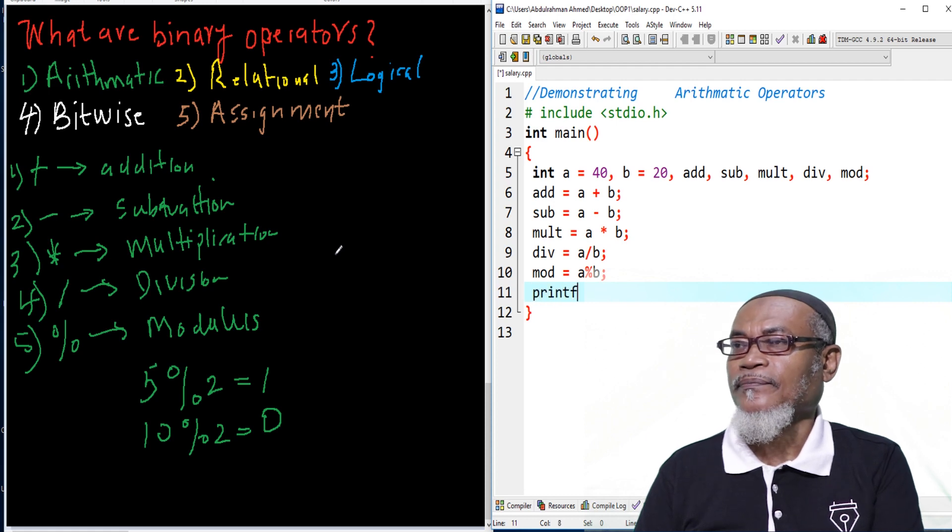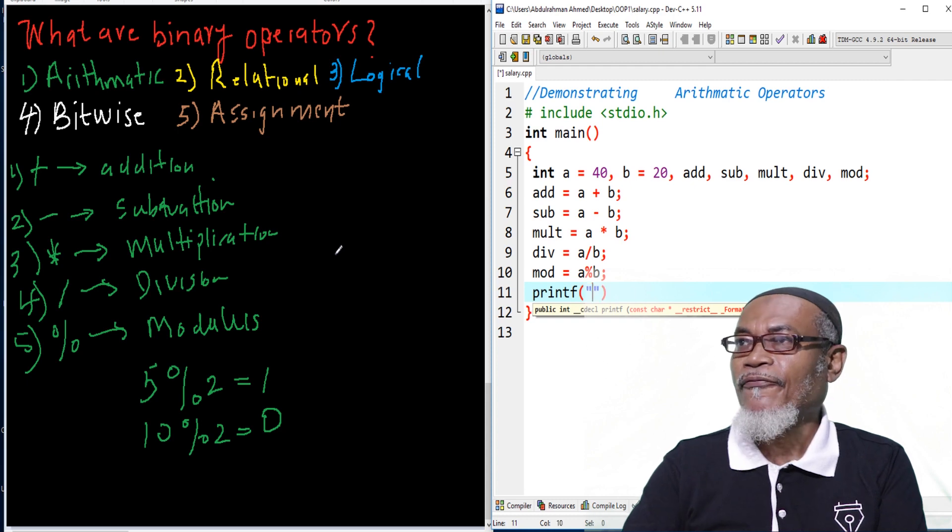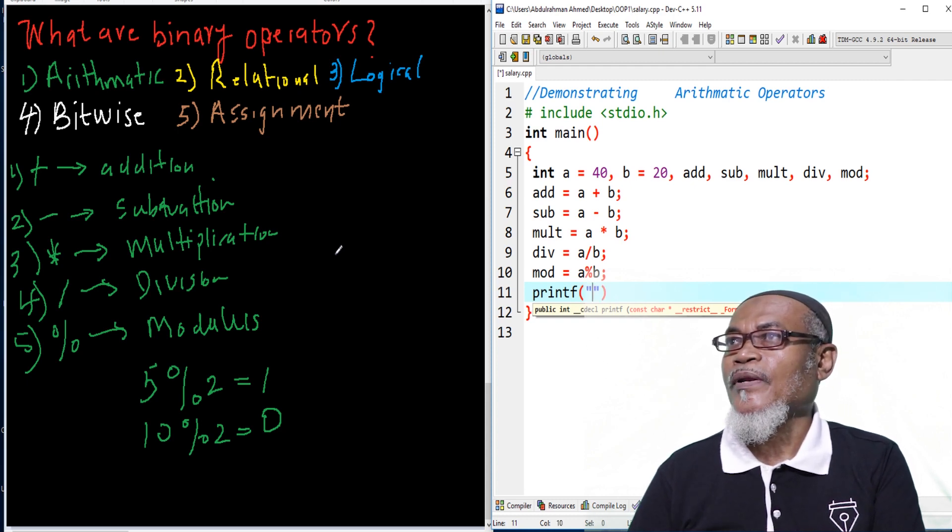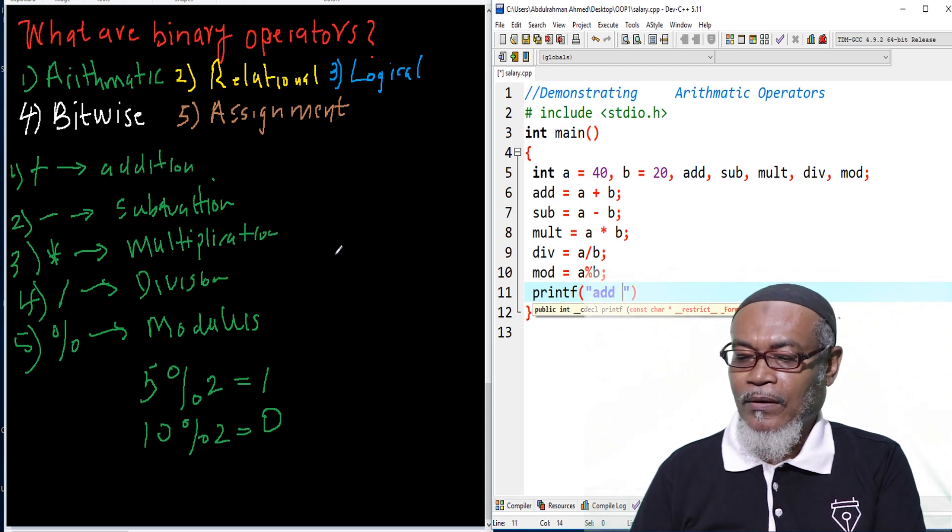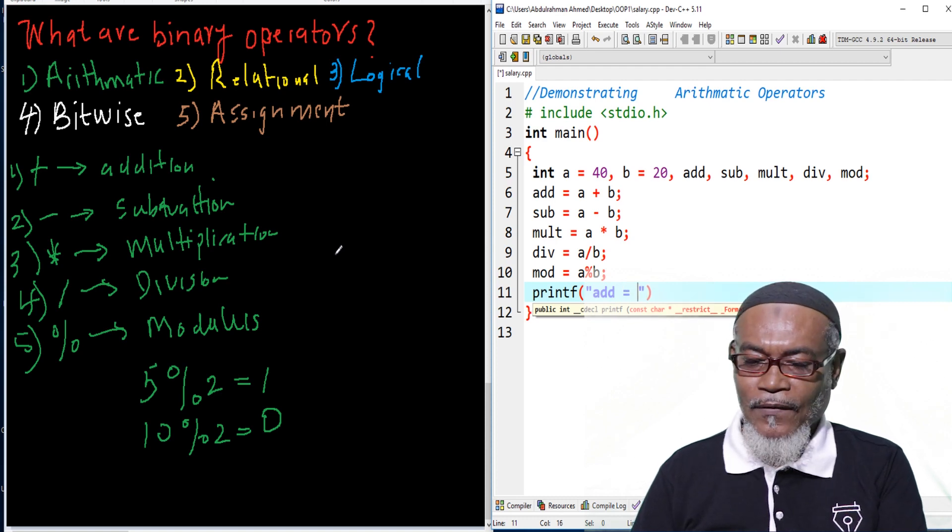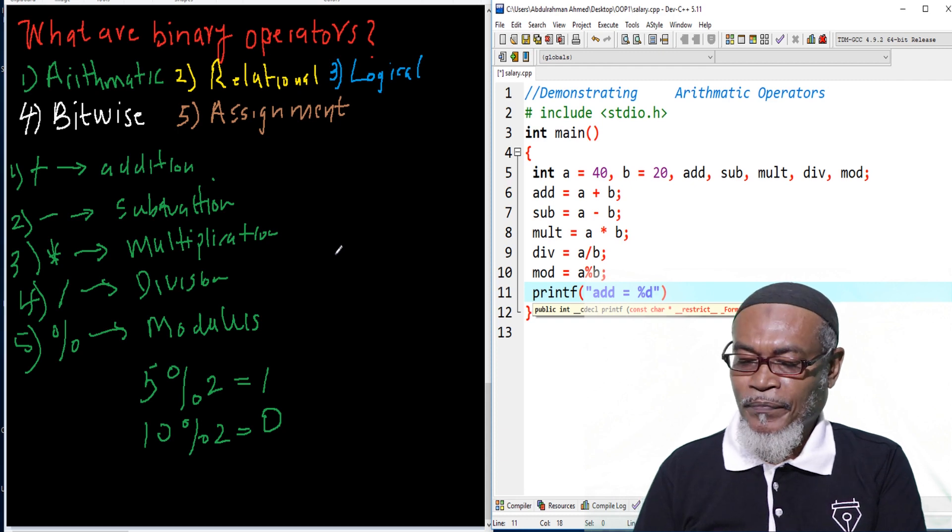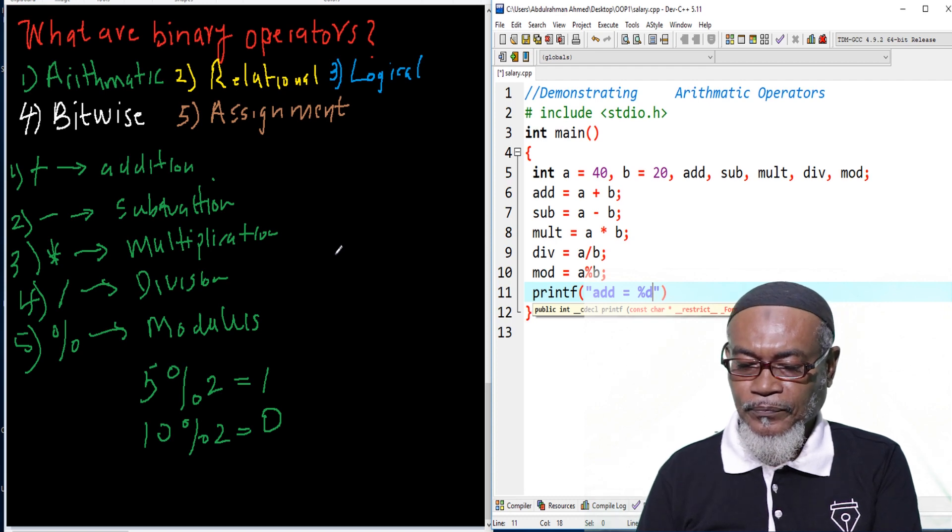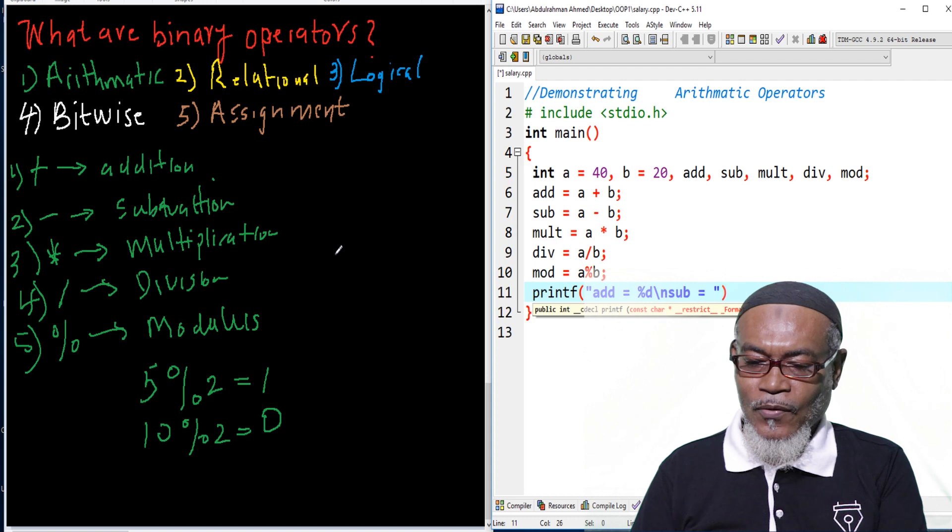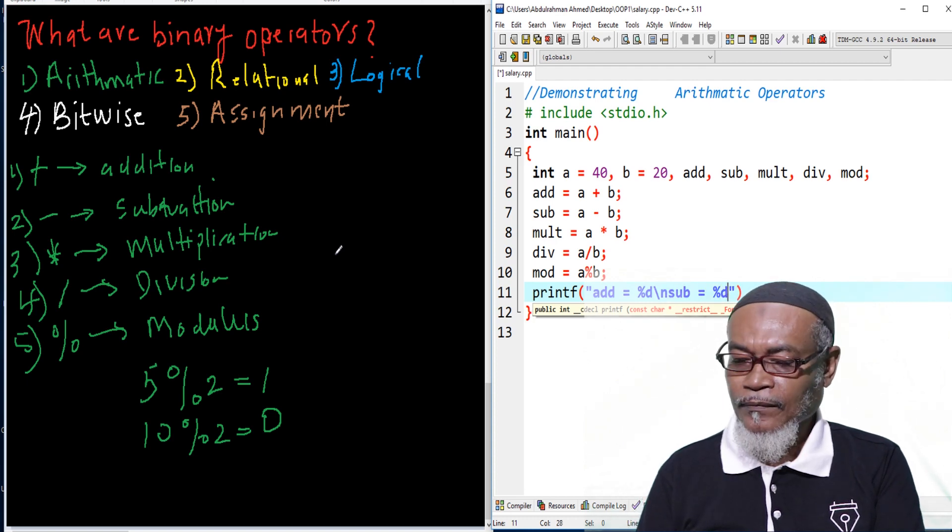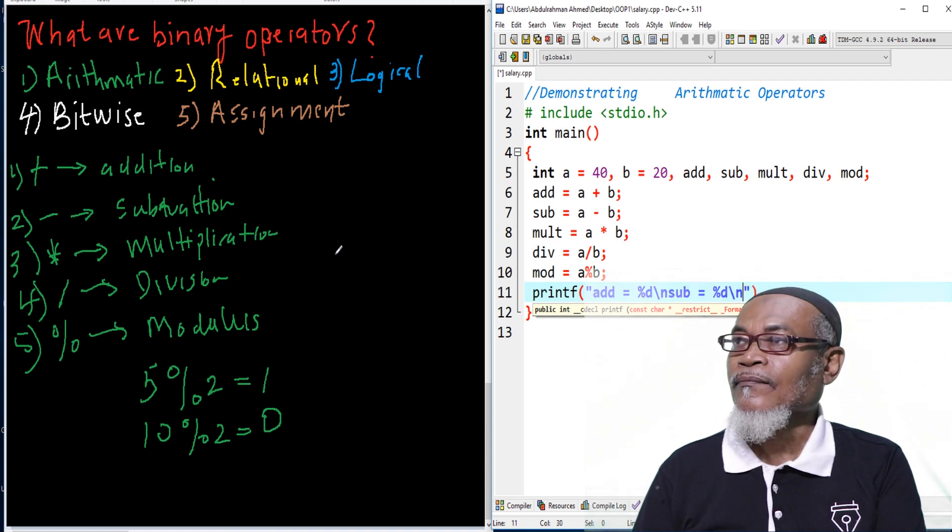Let's put our printf. And basically, on our printf, what do we want to display? We want to display addition. We'll have our add, and then put an equal sign, and we'll have our format specifier for that particular one. Then, we'll move on to our next line. We'll have a backslash N for our next line. The next item is sub equals to, and then here we're having a format specifier, which is of type integer.